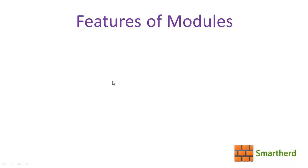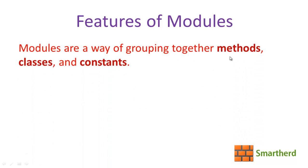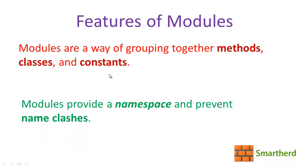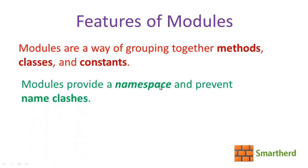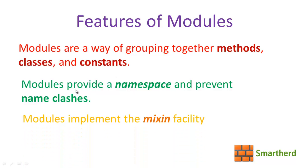Now let's come to the features of modules. You can group together methods, classes and constants in a single module. Second, it provides a namespace and prevents name clashes. Name clashes means you can have two methods of the same name in two different modules and it won't clash. Modules can also implement the mixin facility — we will have a tutorial on that later on, no need to worry about it now.